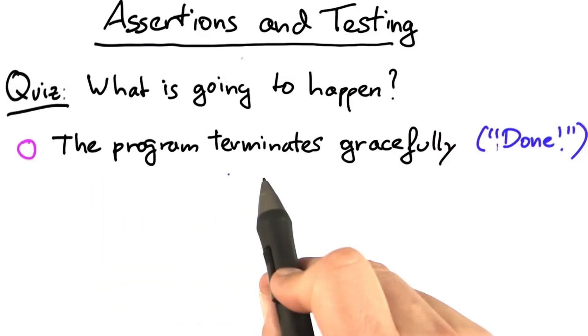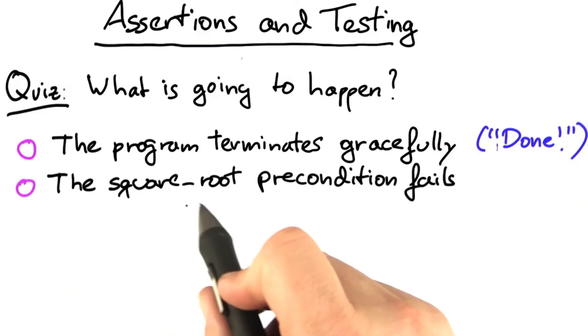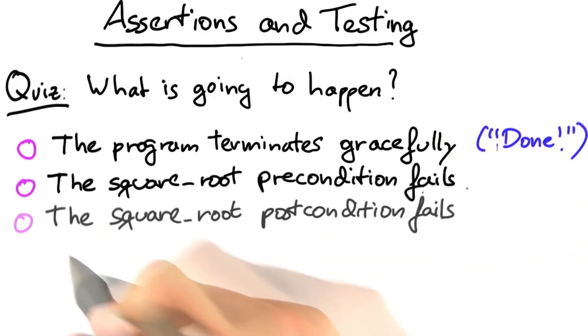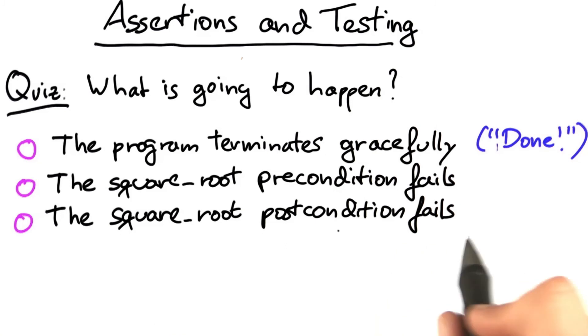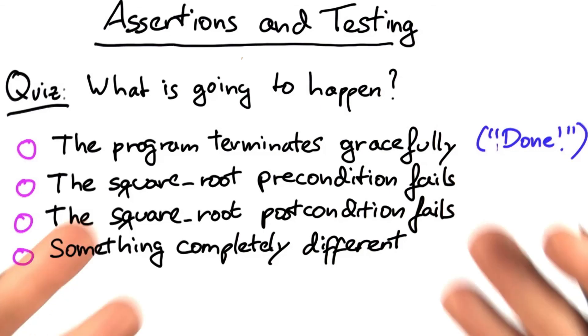Is it that the program terminates gracefully, the output's done, all tests are passed? Is it that the square root precondition fails? Is it that the square root postcondition fails? Or, thinking of Python, do we see something completely different? Over to you.